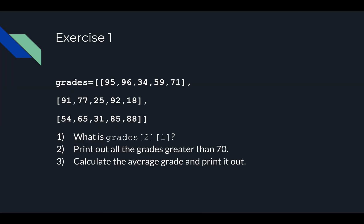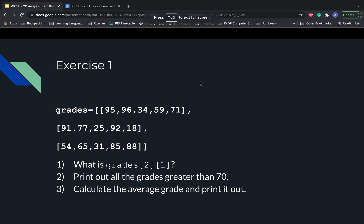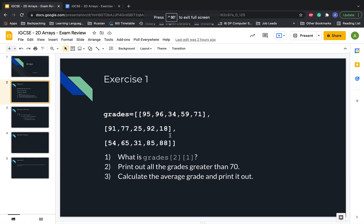What we've got right here is a 2D array called grades. Remember, this is signified by the outer square bracket and then three arrays inside this outer array. We're going to do some fairly simple tasks: find a grade at a specific position, print out all grades greater than 70, and then calculate the average grade and print it out.